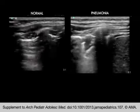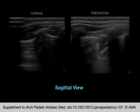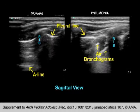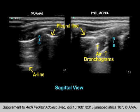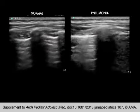These ultrasound images are captured in the sagittal view. The left video panel shows normal lung with horizontal lines in the lung parenchyma that are parallel to the pleural line. These are termed A-lines, which represent healthy, aerated lung.